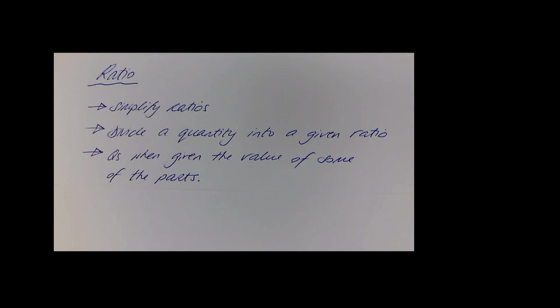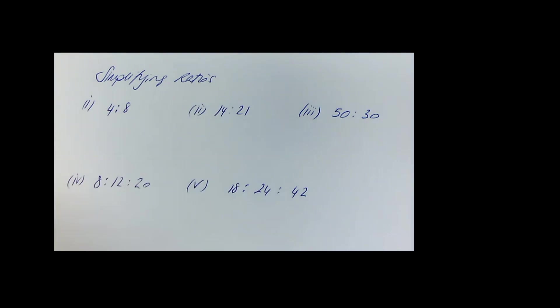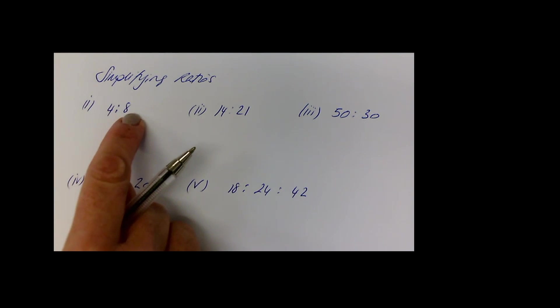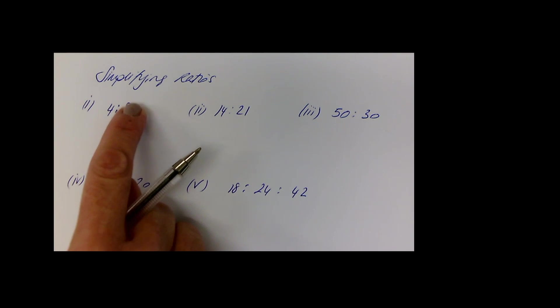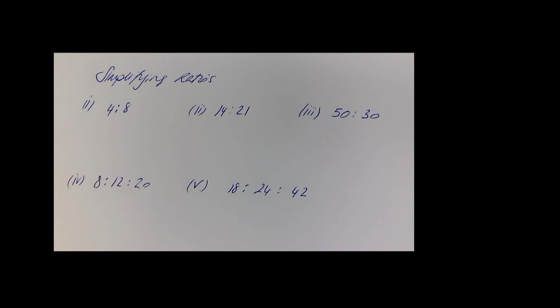Let's start off with simplifying ratios. You know it's a ratio when you have two dots in the middle. Dividing something into a ratio is all about splitting up into parts and proportions. When you see a ratio it looks like this, and simplifying ratios is the same sort of idea as simplifying fractions.